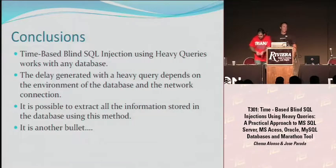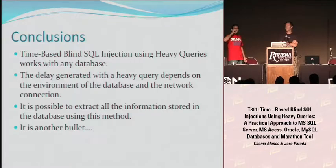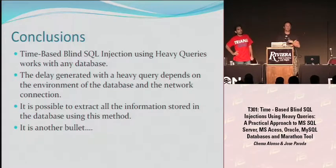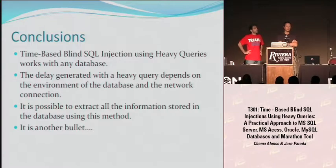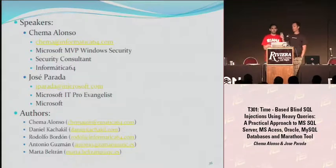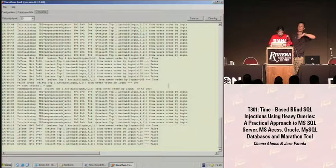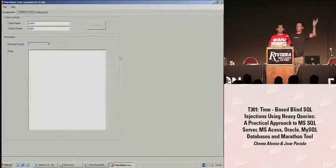Conclusions: as you have seen, this method works with any kind of database, and it doesn't matter if the database has a delay function or not. It's not a very quick method — it's slow depending on the queries we have to build. But it's very useful for finding vulnerabilities that don't show up using other methods. It's not a silver bullet — we don't think it's a silver bullet — but it's just another bullet in your pocket that you can use when you have to. We'll leave you with our contact information and information about the people who helped us with this presentation, coding the application, and doing some research. We'll be in room 104 for questions. Have a nice DEF CON. Thank you all.